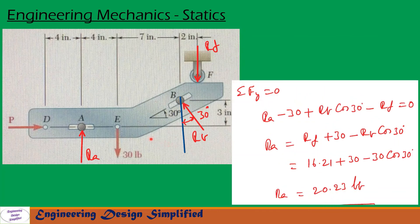Now let us take forces along the vertical direction and write sigma Fy equals 0. R_A acts vertically upwards; 30 LB acts vertically downwards; the vertical component of R_B is R_B cos 30 acting upwards; and R_F acts vertically downwards. So R_A minus 30 plus R_B cos 30 minus R_F equals 0. Substituting R_B and R_F values and simplifying gives R_A equal to 20.23 LB.